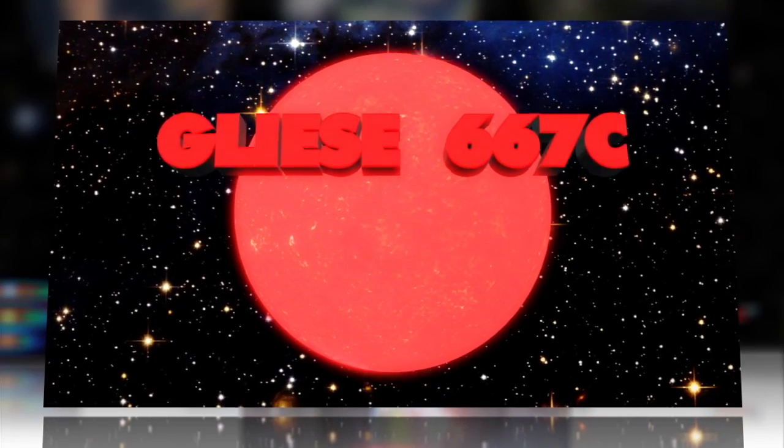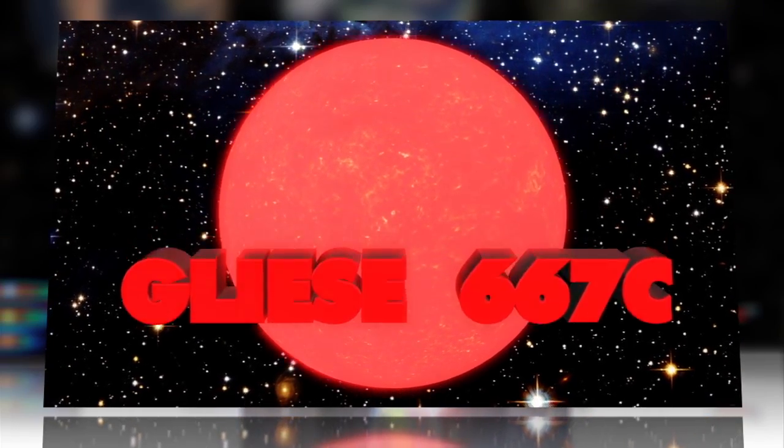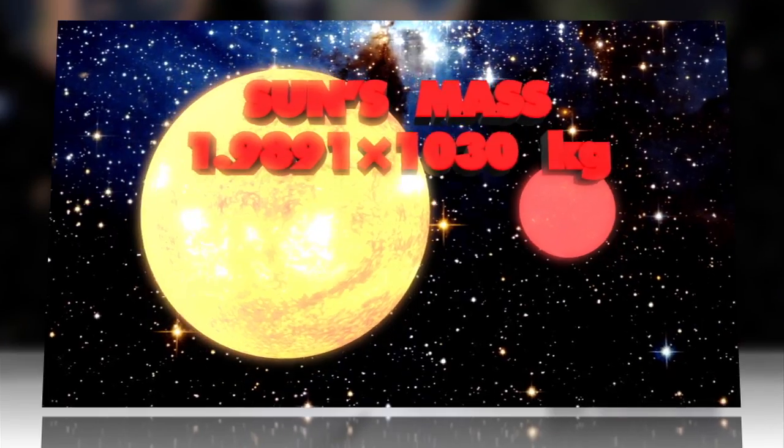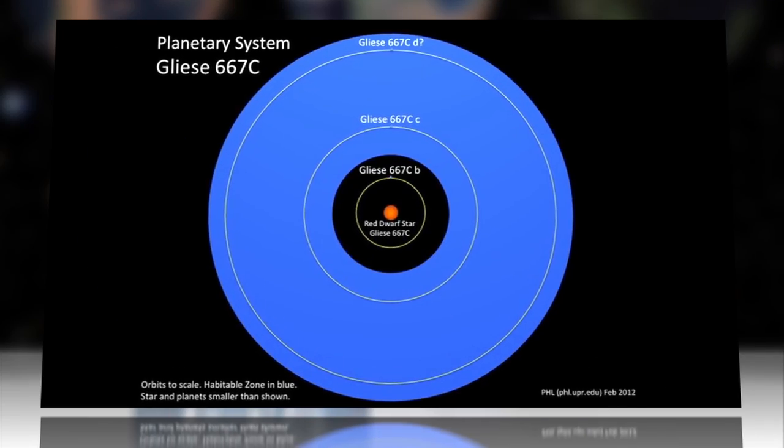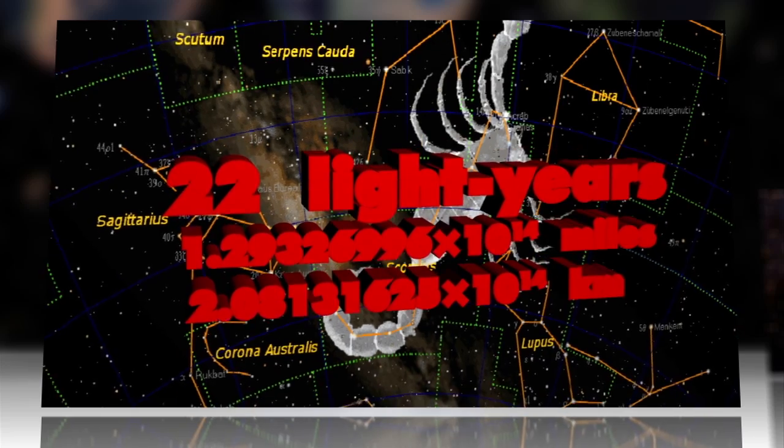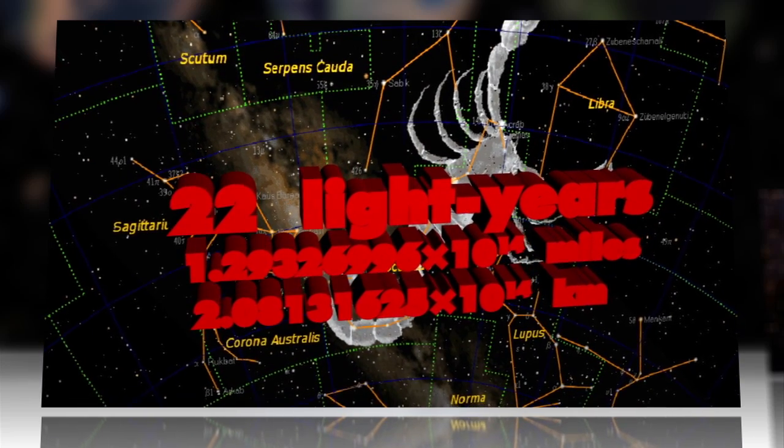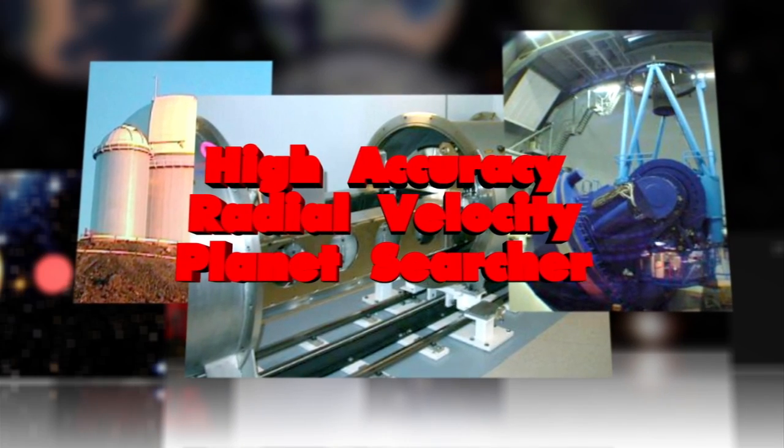Gliese 667c is a small, faint star about a third the mass of the Sun that is part of a triple-star system, a celestial stone's throw of 22 light-years away. Combining existing data with new observations from the HARPS spectrograph in Chile, researchers discovered a total of seven exoplanets.